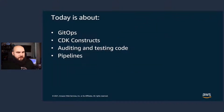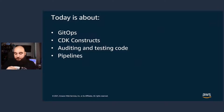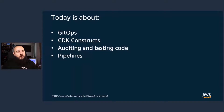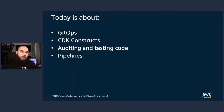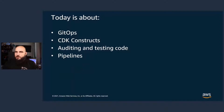What are we going to be talking about today? We're going to be covering a bunch of topics. We're going to talk about GitOps in general, CDK — the AWS Cloud Development Kit — and its constructs. We're going to talk about how to audit and test that code. Yes, you can test your infrastructure code. And we're also going to talk about how to make it move fast with pipelines.